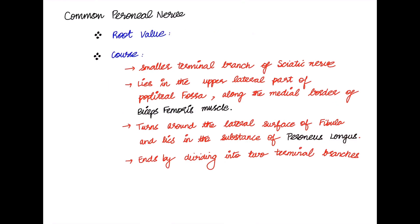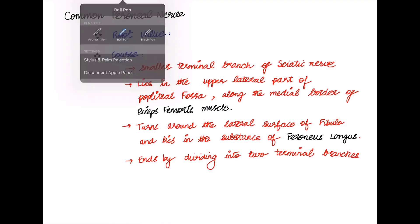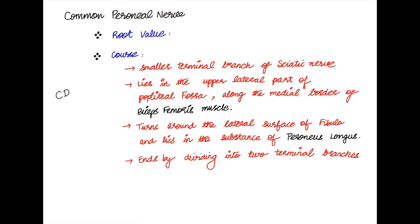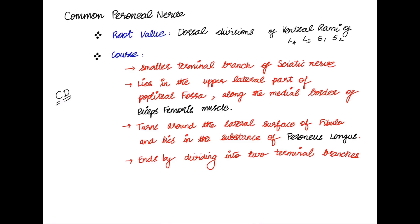Now we come to the common peroneal nerve. The root value, as already mentioned, is the dorsal divisions of the ventral rami — anterior or ventral — of L4, L5, S1, and S2.